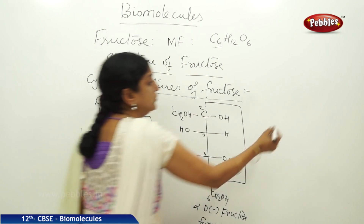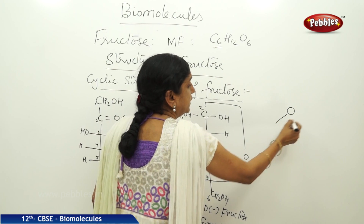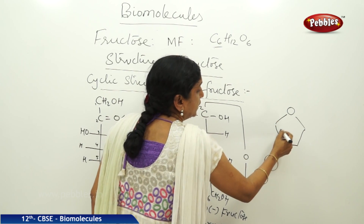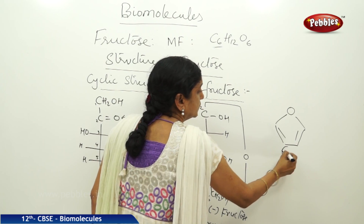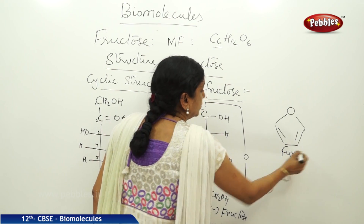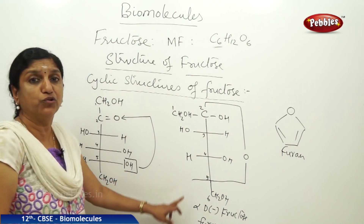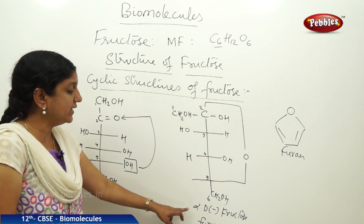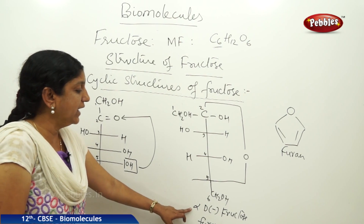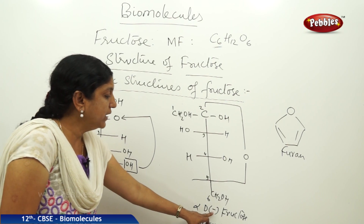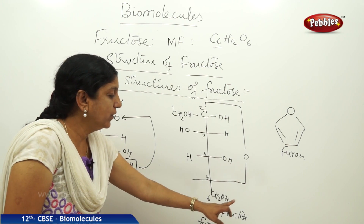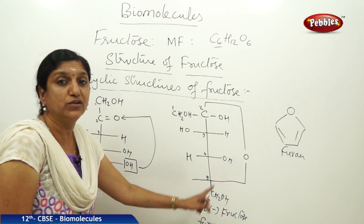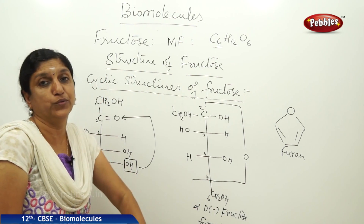It is a five-membered ring which resembles the organic compound furan. That is why the ring system present in fructose is described as furanose. So you can say it is alpha D minus fructofuranose and beta D minus fructofuranose.